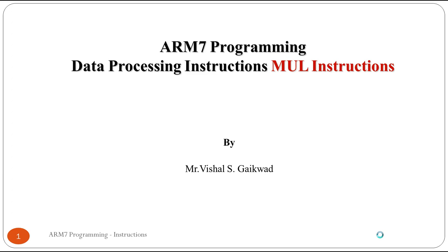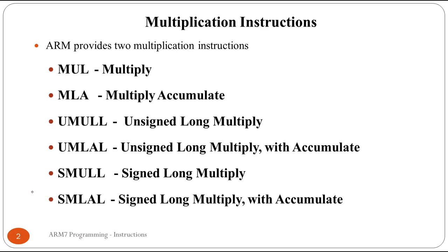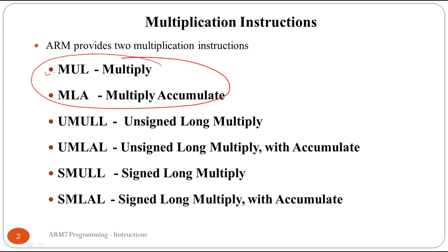In this tutorial we are going to learn the multiplication instructions in ARM7 programming. We have already studied a few instructions related to arithmetic and logical operations. Now in this section we are going to study multiplication instructions. ARM basically provides two basic multiplication instructions: the first is MUL, which is multiply, used to multiply two numbers, and the second is MLA, multiply and accumulate, where a multiplication is performed and then one number is added to the product.